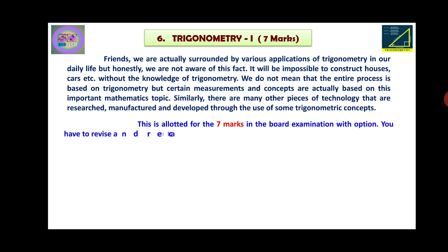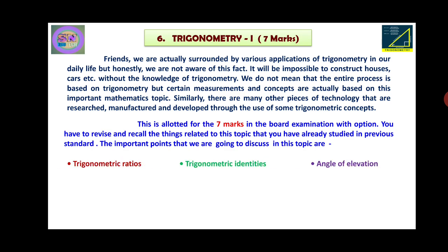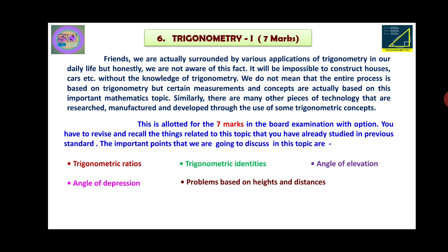This topic is allocated for seven marks in the board examination with option. You have to revise and recall things already studied in the previous standard. The important points we are going to discuss are trigonometric ratios, trigonometric identities, angle of elevation, angle of depression, and problems based on heights and distances.